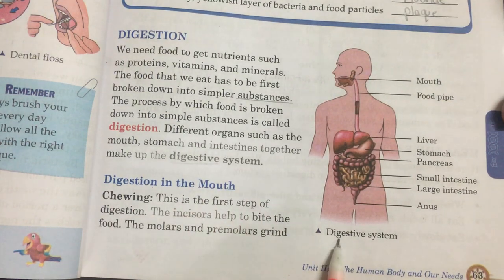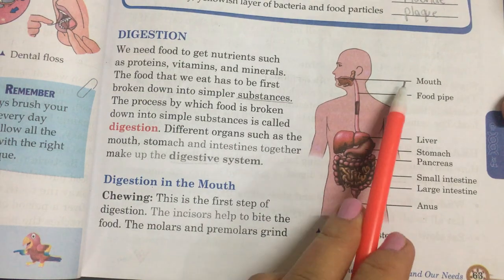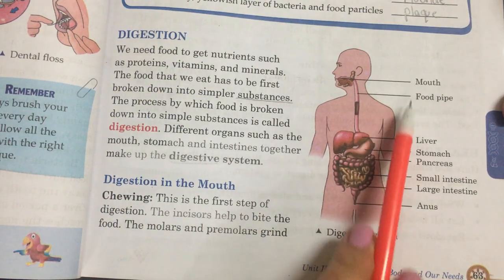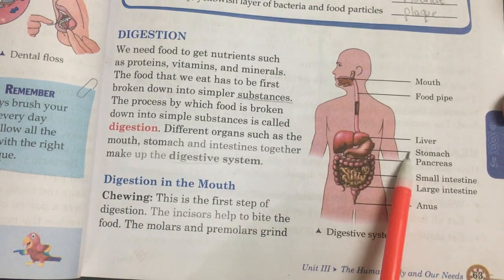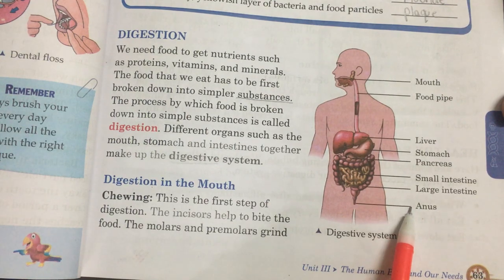Here is a diagram of the digestive system. It has the mouth, food pipe, liver, stomach, pancreas, small intestine, large intestine and anus.